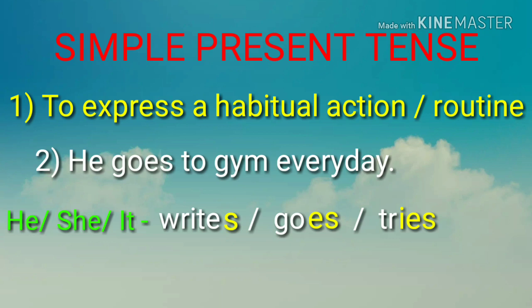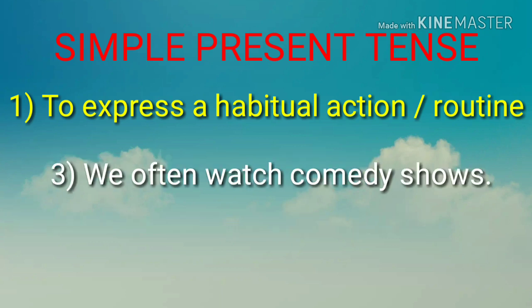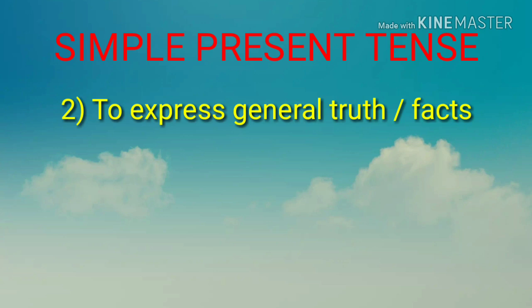'Go' और 'goes' का अर्थ same है और दोनों ही verbs simple present tense को दर्शाते हैं। Let's take one more example: 'We often watch comedy shows' — हम हमेशा comedy shows देखते हैं — यह हमारी habitual action है।